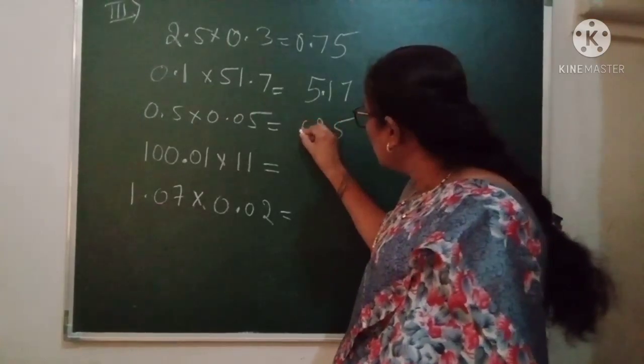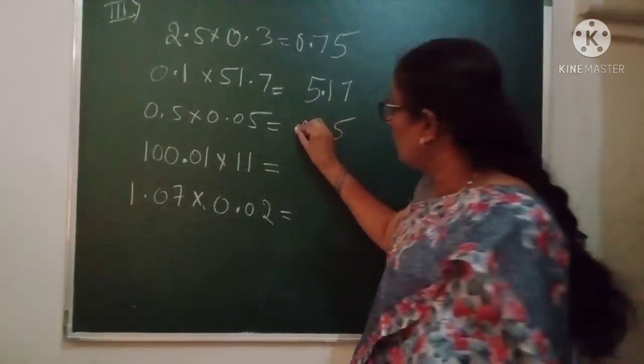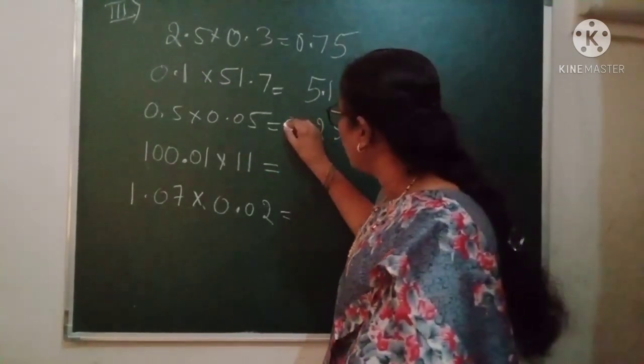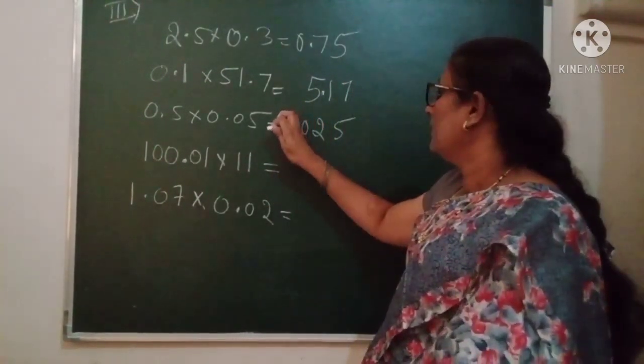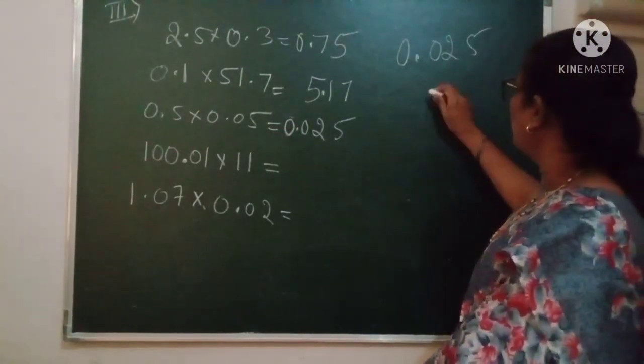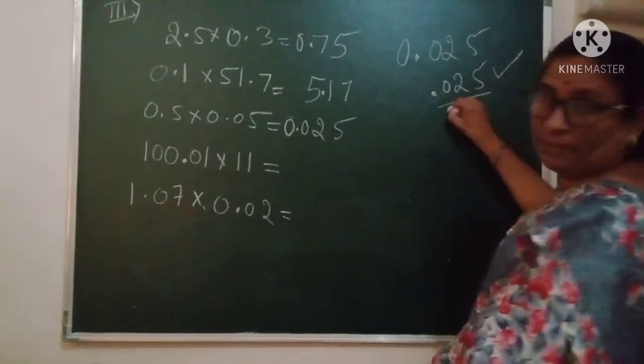So 1, 2, 3. Because there is no digit here, we have to take 0, then point. So the answer is 0.025. Most students ask whether we have to write this 0 before the point, or without that it is okay.